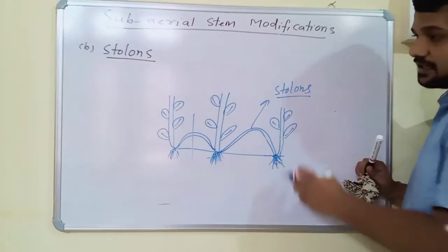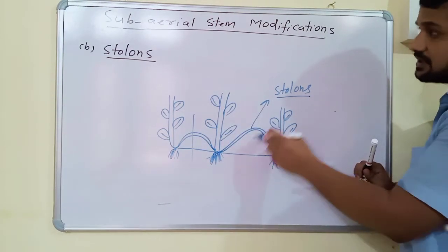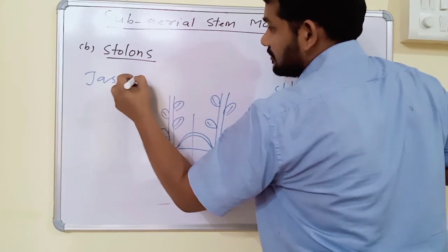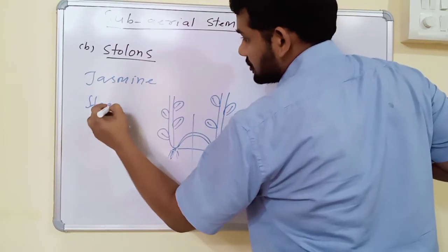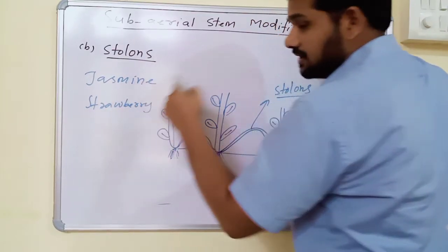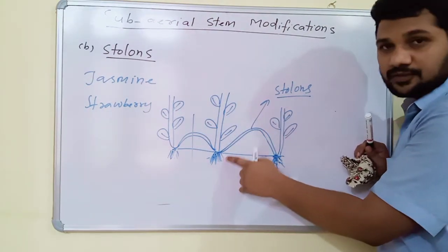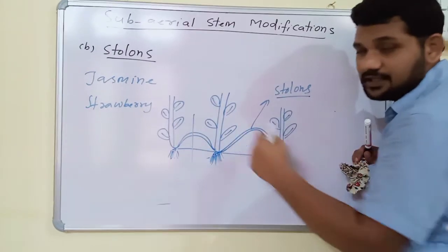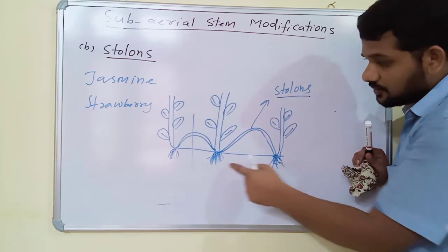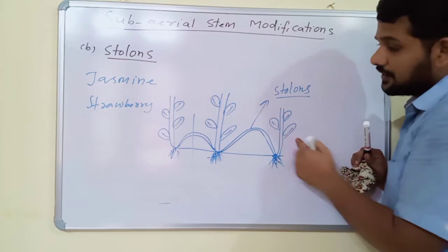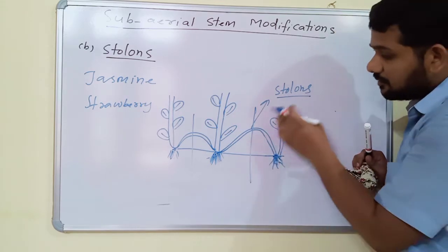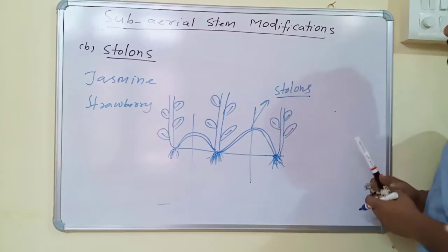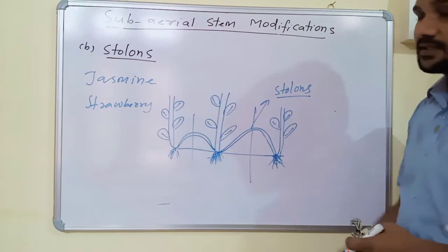Stolons may break off and take part in vegetative propagation. Stolons are usually found in plants like jasmine and strawberry. In these plants, the base of the crown produces long, slender branches called stolons. Stolons grow obliquely downwards, touch the soil, produce adventitious roots, and become aerial. When stolons break off, the broken part becomes an individual plant — that is vegetative propagation.